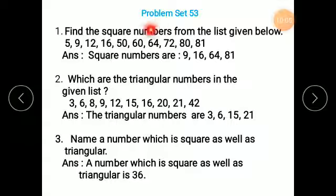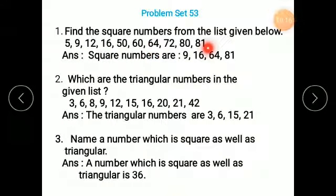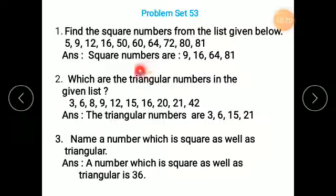Problem: Find a square number from the list given below. 5 is not a square. The square numbers from the list are 9, 16, 64, and 81.